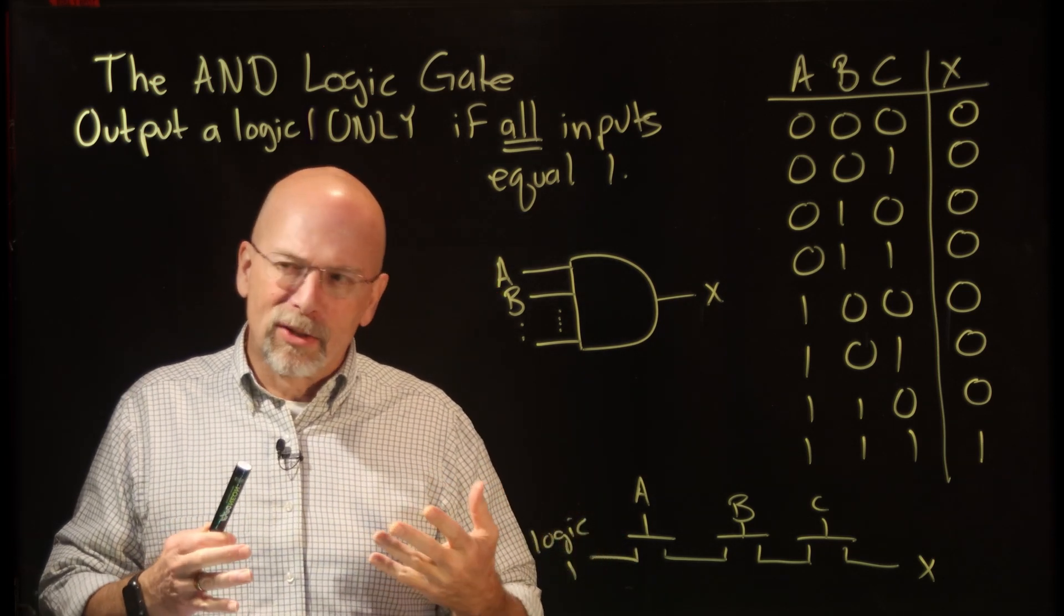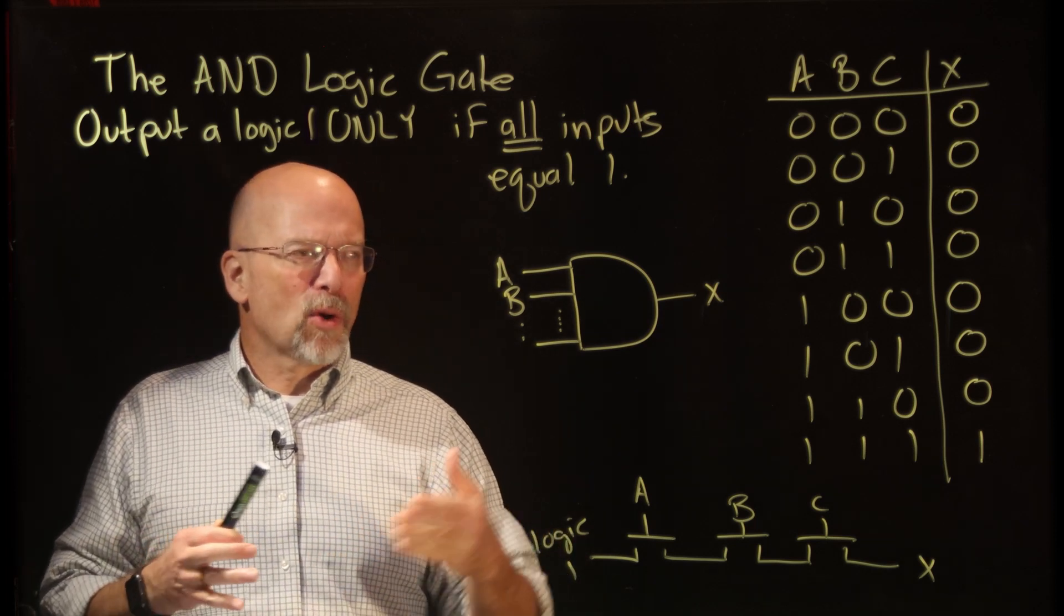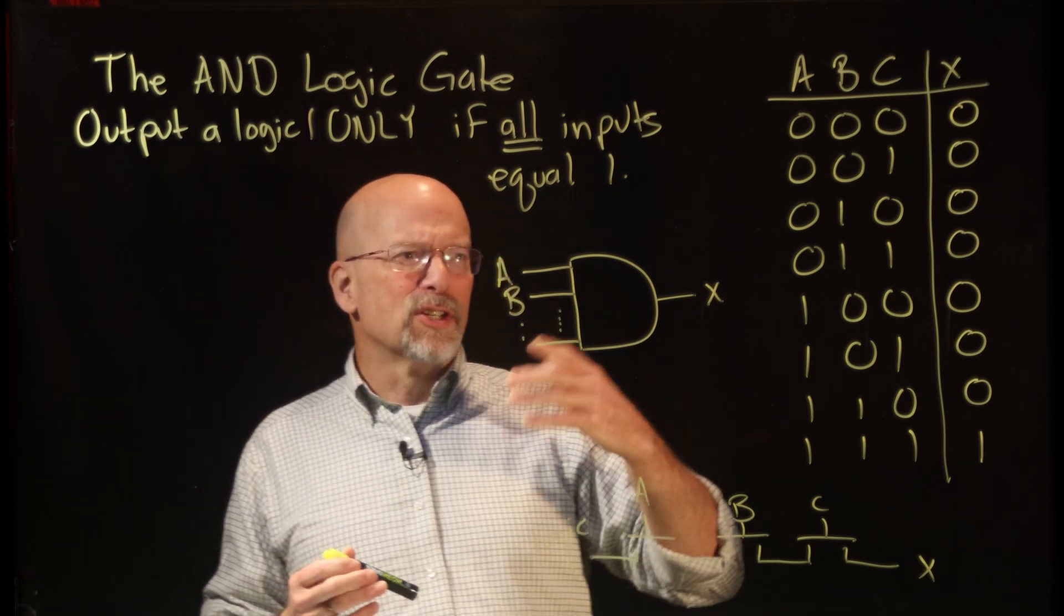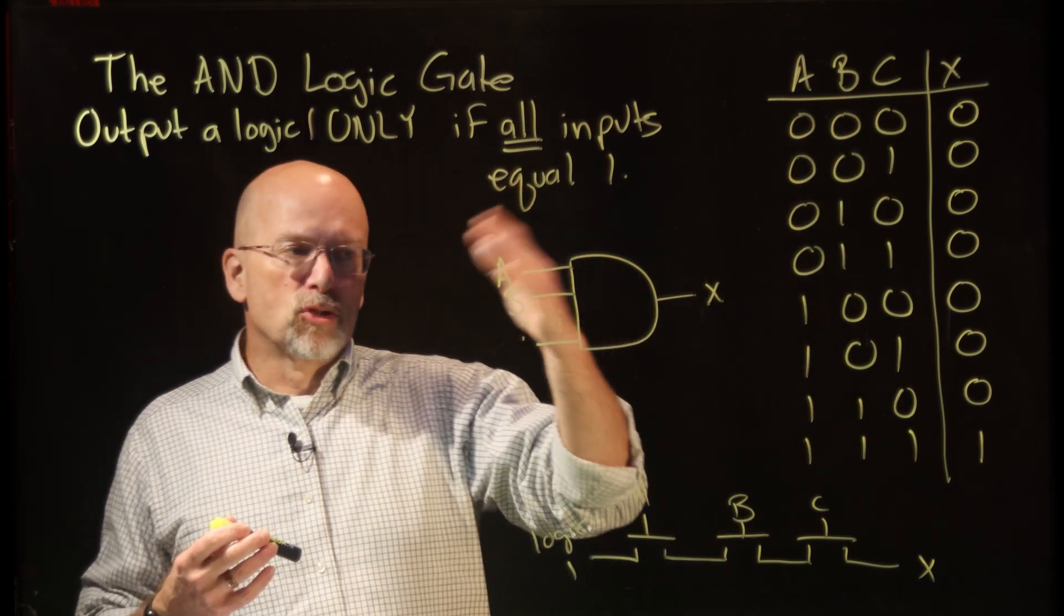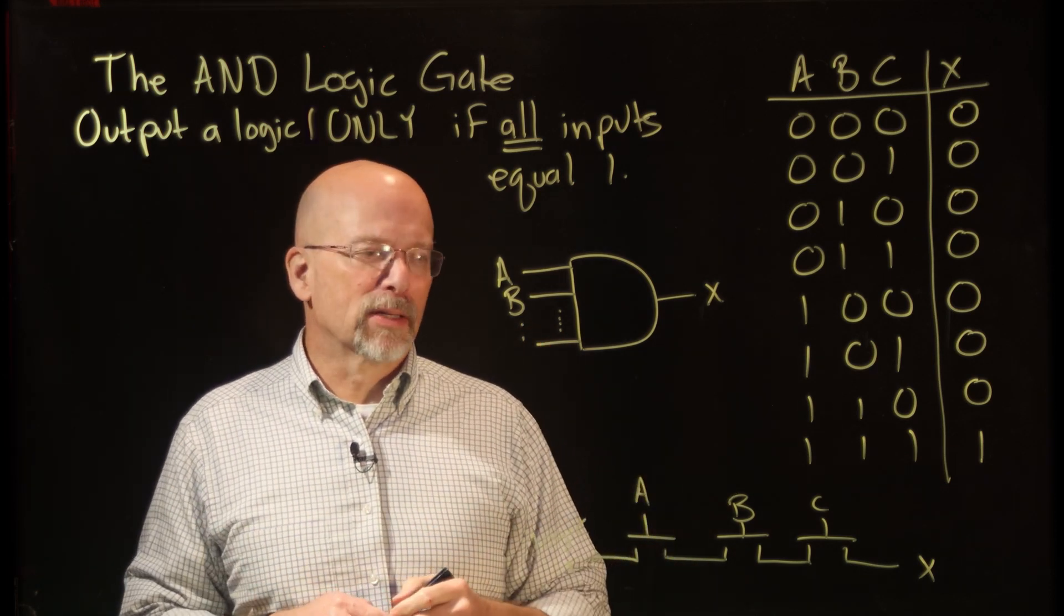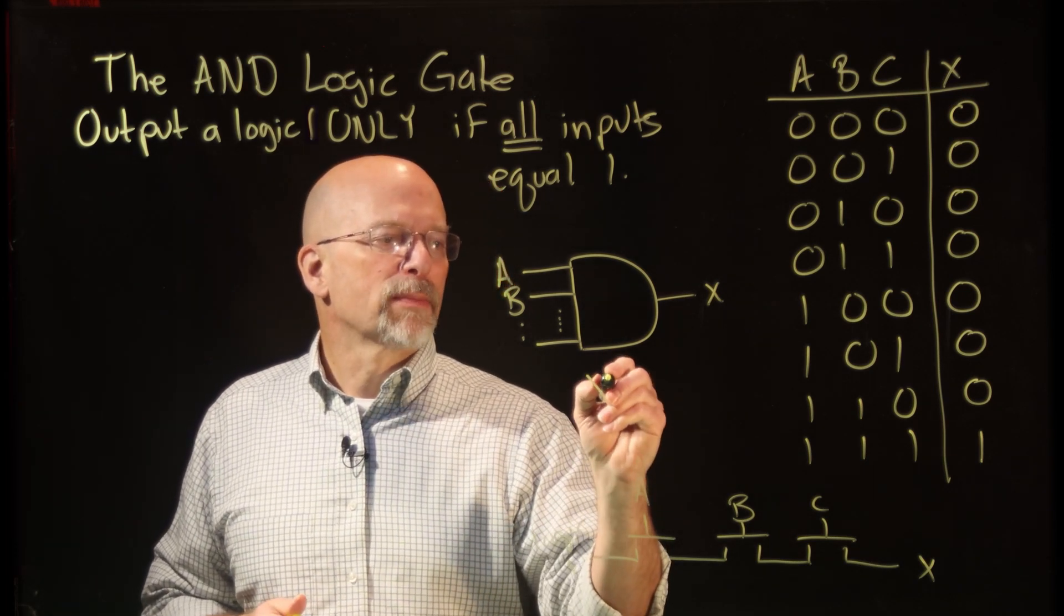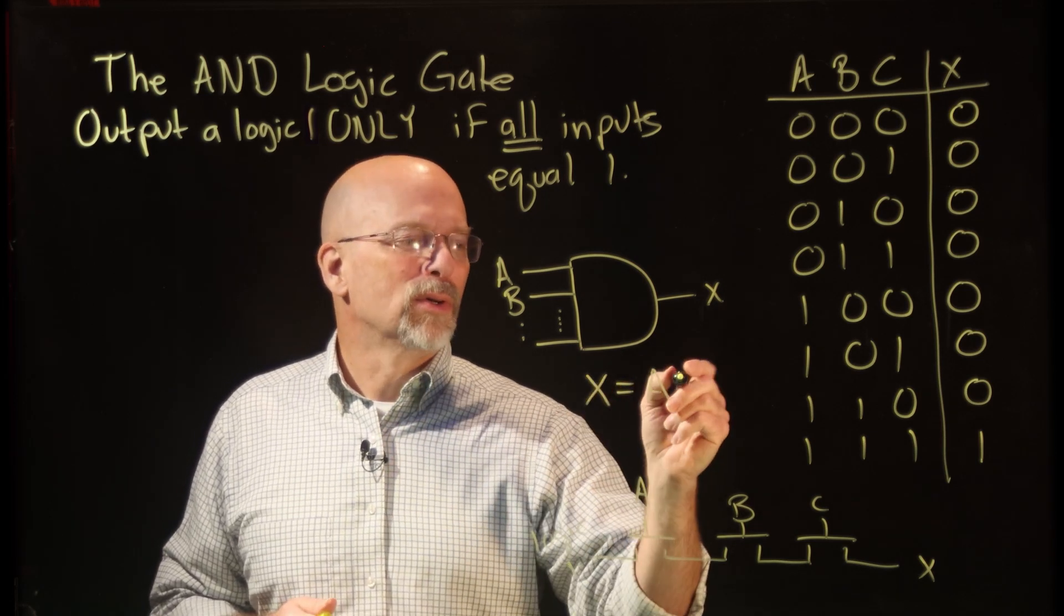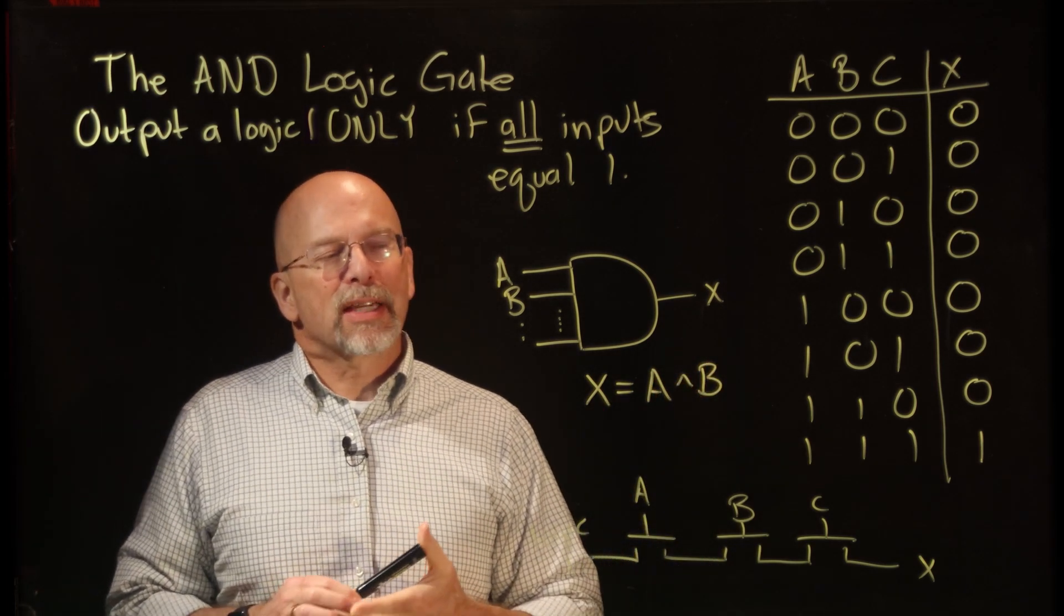Now the second thing is we want to have some sort of a mathematical representation, some symbol, a mathematical type symbol in order to represent this operation. The reason for this is you don't want to have to describe the AND gate operation with the truth table, and sometimes drawing the circuit out is a little cumbersome. So we want to actually be able to write this out as a mathematical expression. A lot of mathematicians would say something along the lines of X equals A and B. They use this little carrot.